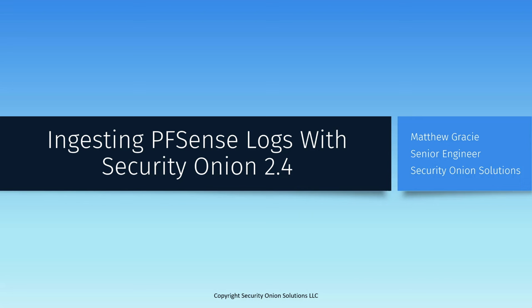While this video is specific to PFSense log traffic, the same general methodology will work for any Elastic integration that you would like to enable and use to parse data in your environment. So whether you've got logs coming from an on-prem source like a firewall, or from a cloud service like AWS or Azure, you can use Elastic integrations in conjunction with Security Onion to put all of that information in a single, unified interface and analyze it with the hunt and dashboard tools. For a current list of supported integrations, check out our documentation at securityonion.com/docs.